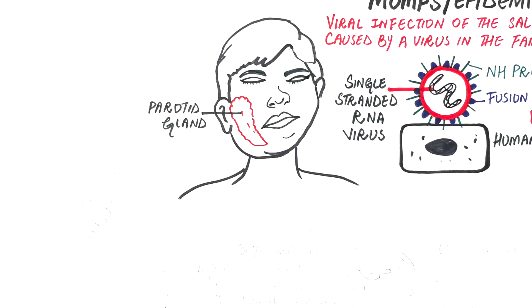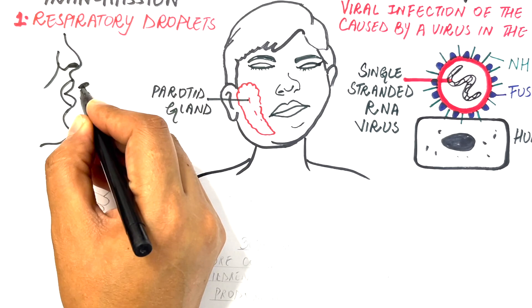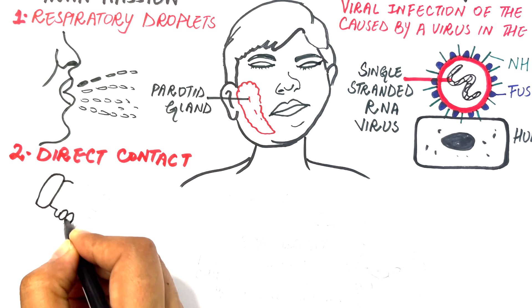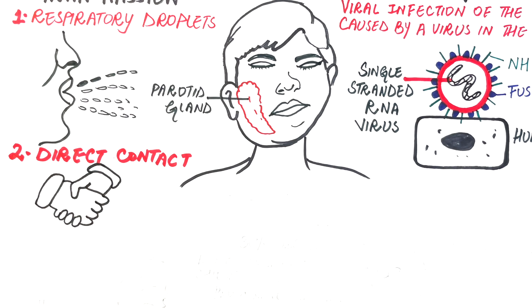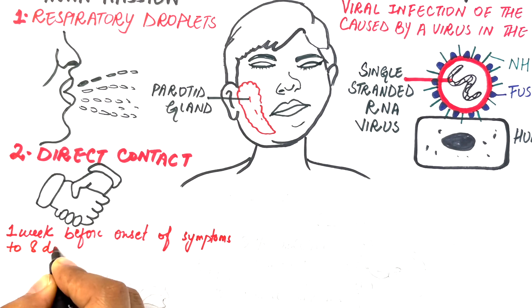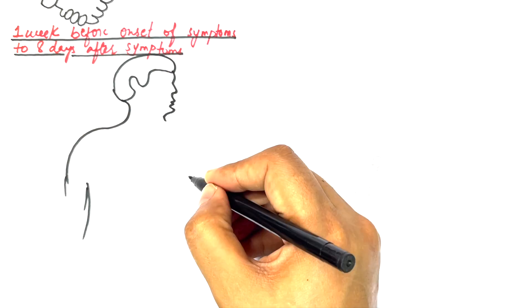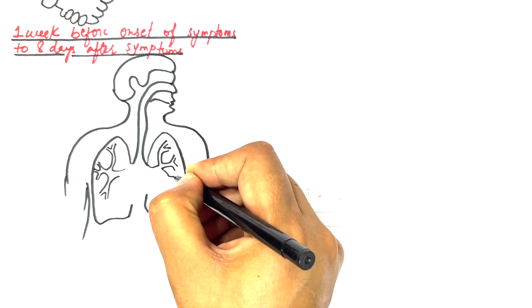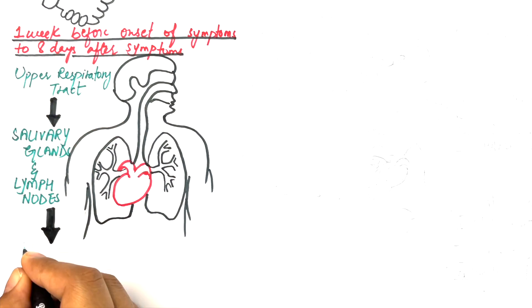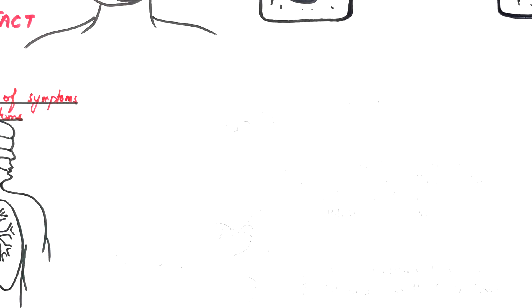Humans are the only natural host of the mumps virus. The virus is primarily transmitted by respiratory secretions such as respiratory droplets and saliva, as well as via direct contact with an infected person. Transmission can occur from one week before the onset of symptoms to eight days after symptoms have appeared. During infection, the virus first infects the upper respiratory tract, from where it spreads to the salivary glands and lymph nodes. Infection of the lymph nodes leads to presence of the virus in blood, which spreads the virus throughout the body.